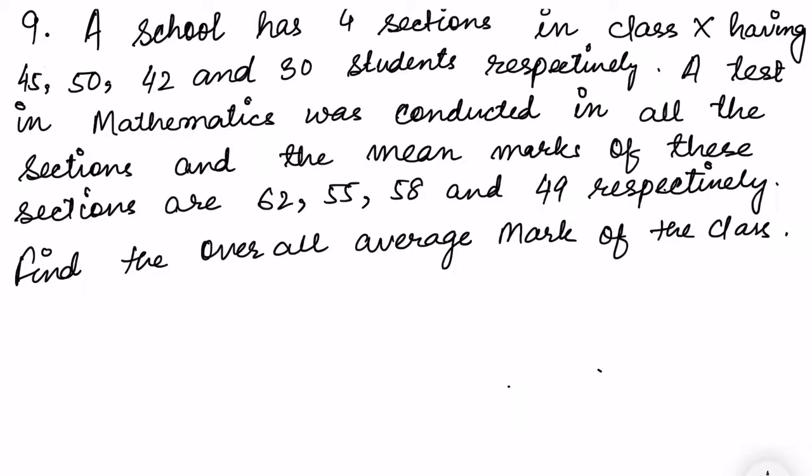Now we are doing exercise 13.1 question number nine. The question is: A school has four sections in class 10 having 45, 50, 42 and 30 students respectively. A test in mathematics was conducted in all the sections and the mean marks of these sections are 62, 55, 58 and 49 respectively. Find the overall average mark of the class.